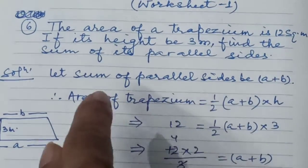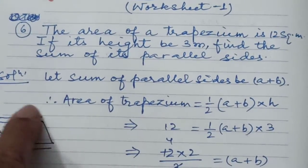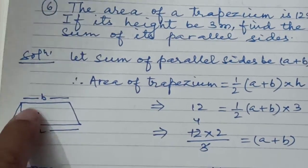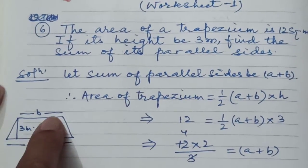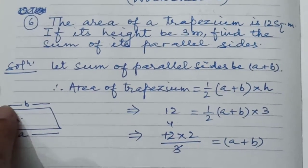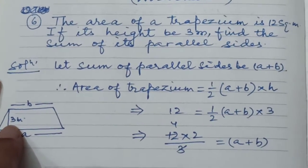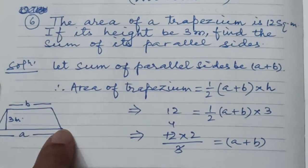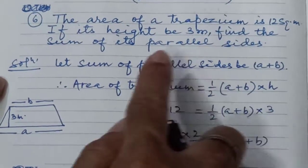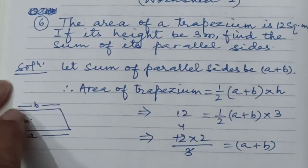Let's start the solution. Let the sum of parallel sides be A + B. See the figure — this is a trapezium where one parallel side is represented by B and the other by A, and the height is given as 3 meters. We have to find the sum of its parallel sides, A + B.